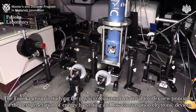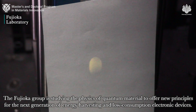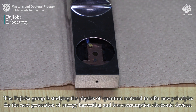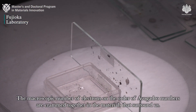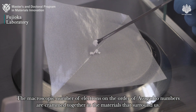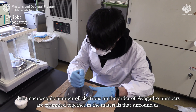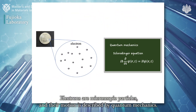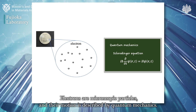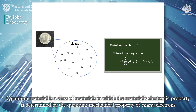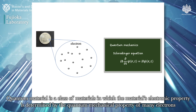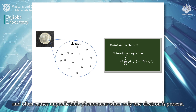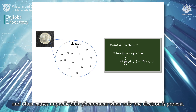The Fujioka group is studying the physics of quantum materials to offer new principles for the next generation of energy harvesting and low consumption electronic devices. The microscopic number of electrons on the order of Avogadro's number are crammed together in the materials that surround us. Electrons are microscopic particles and their motion is described by quantum mechanics. Quantum material is a class of materials in which the electronic property is determined by the quantum mechanical property of many electrons, and often causes unpredictable phenomena when only one electron is present.